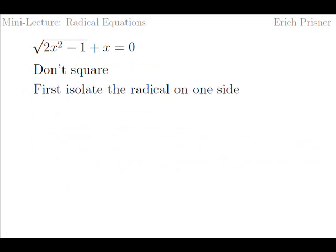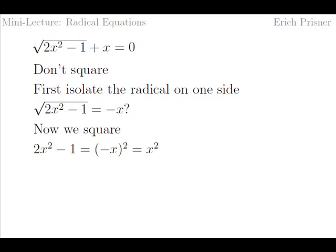First, we isolate the radical on one side. This way, when squaring, we don't square a sum, but rather a square root, and really get rid of it. To isolate the radical, we subtract x on both sides and get square root of two x squared minus one equals negative x. Now we can square. We get two x squared minus one equals negative x squared, which is equal to x squared.